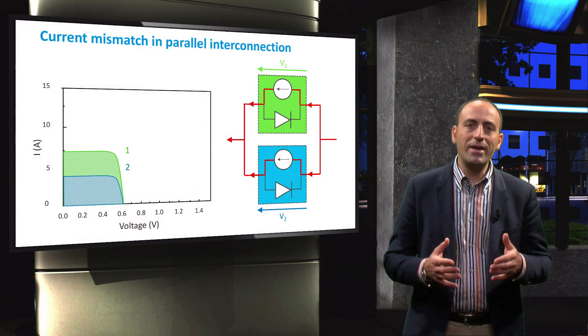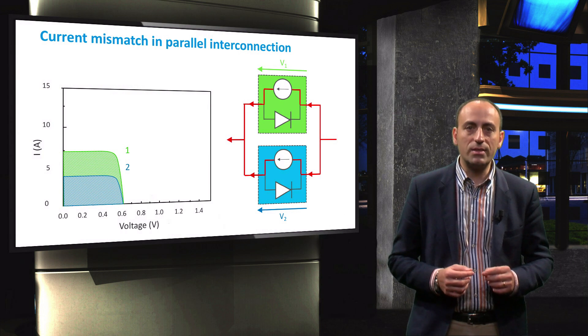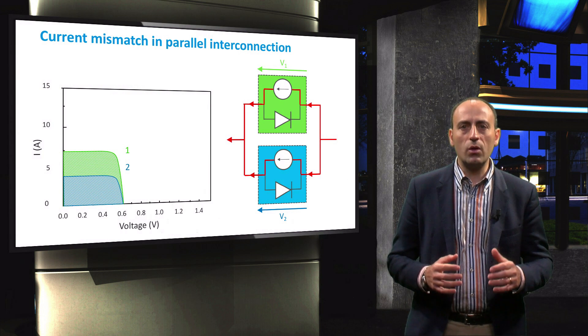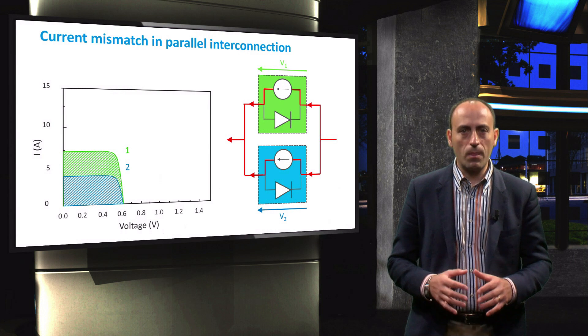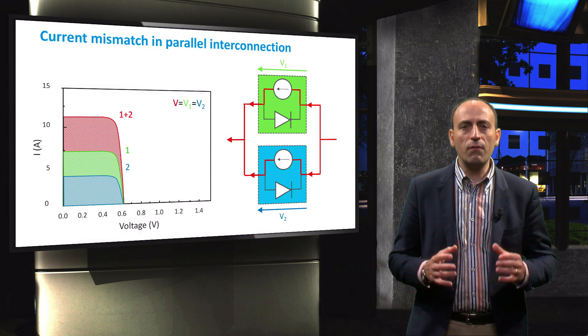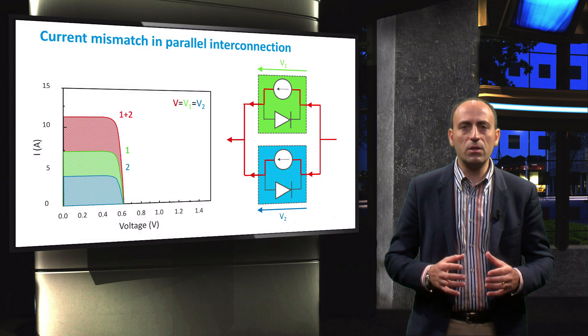What about when we connect two current mismatched solar cells in parallel? In the ideal case, we have two solar cells with the same voltage. We then know that with respect to a single cell, the total VOC of the combined cells will be the same, while the total current is equal to the sum of currents from both cells.